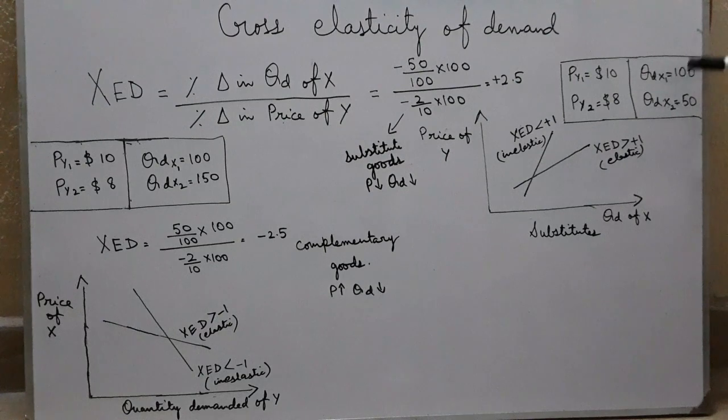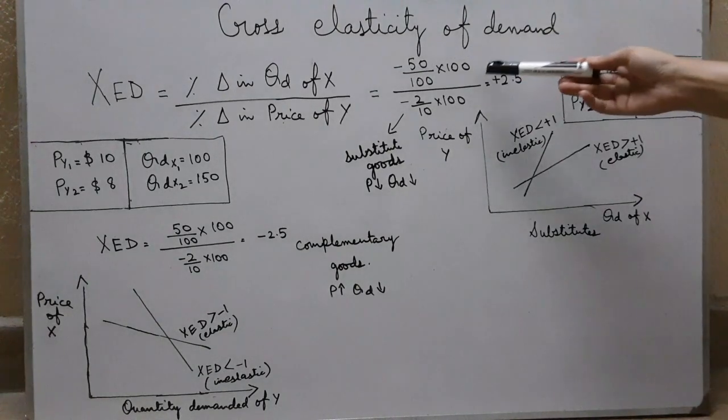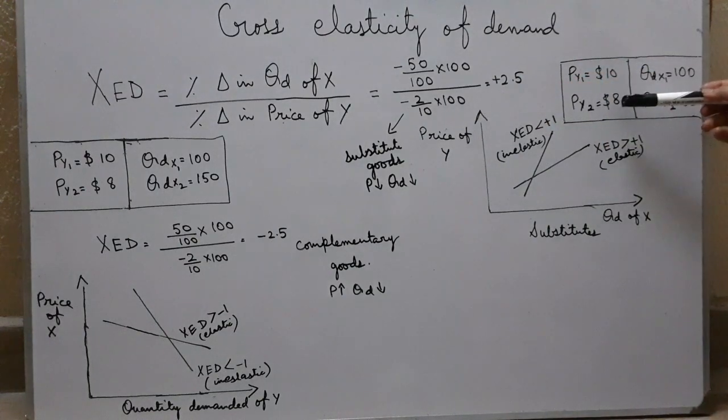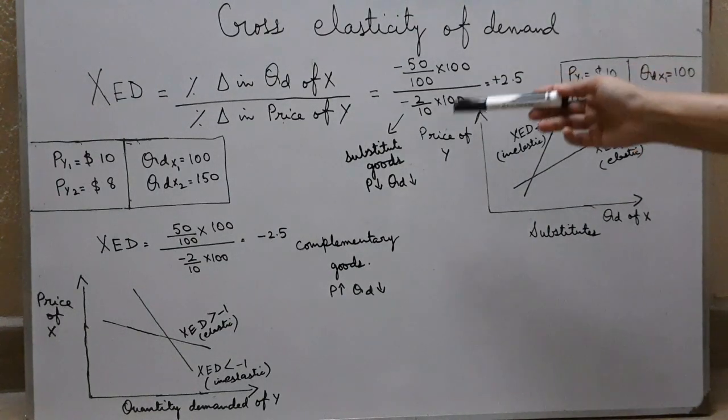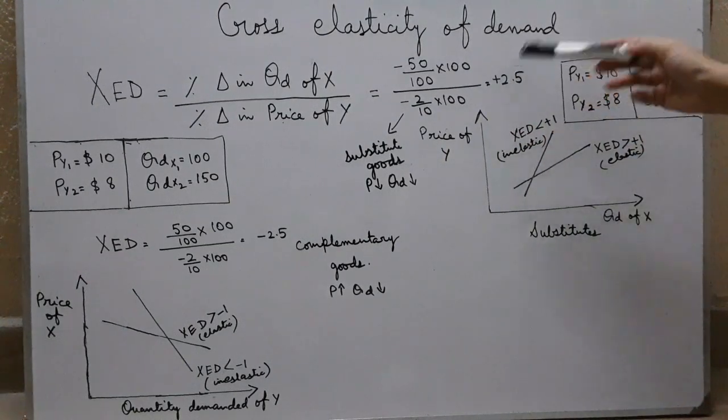These are the values I am taking to calculate this. Change in quantity demanded is minus 50 because Q2 minus Q1 is minus 50 divided by original quantity multiplied by 100. Change in price is minus 2 divided by original price, that is 10, multiplied by 100. The answer comes out to 2.5.